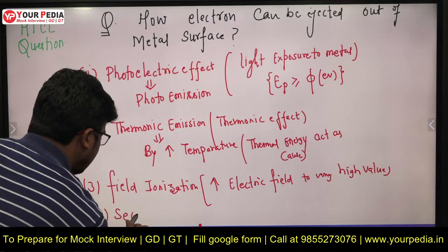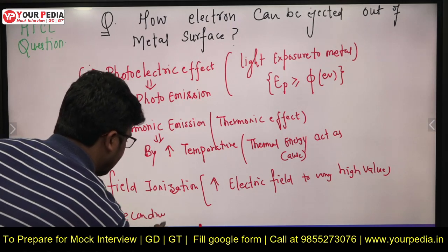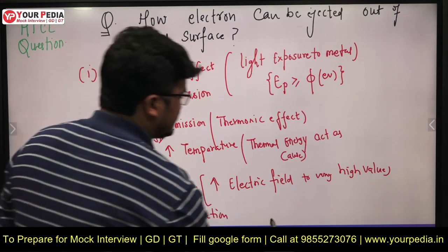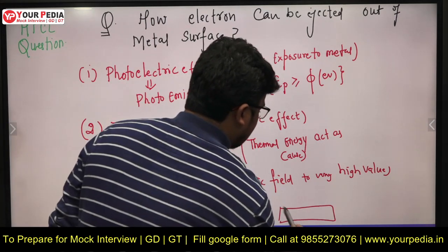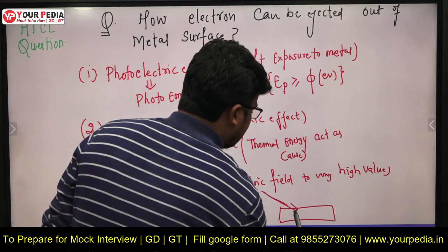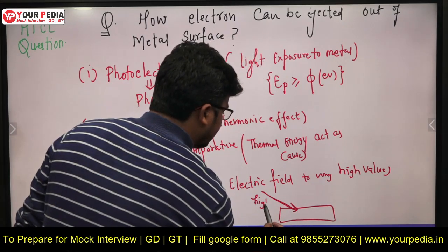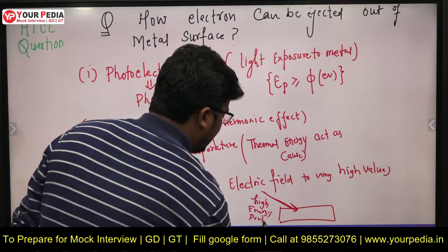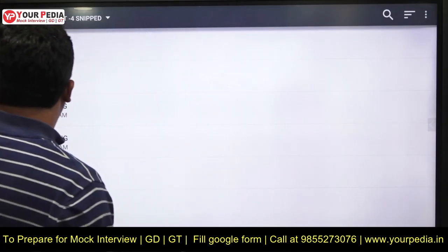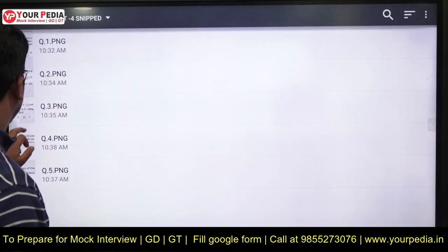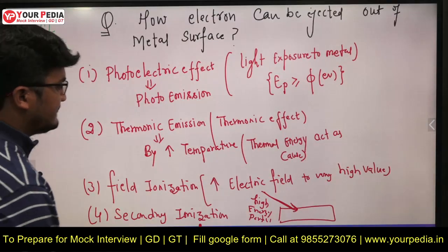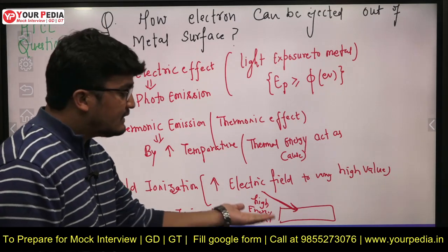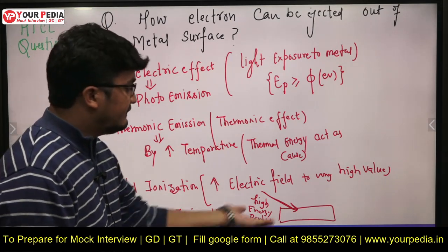There is one more method, that is secondary emission. Suppose you have this metal surface and you are bombarding some high energy particles onto it. That particle will impart its energy when it strikes the surface to those electrons. And if the electron energy becomes greater than the barrier energy, it will be ejected out.